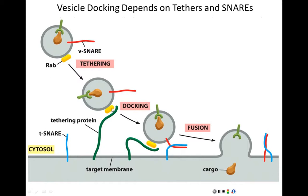RAB proteins on the vesicle membrane are recognized and bound by tethering proteins found on the destination membrane. Tethering proteins specifically bind only to RABs on vesicles that come from appropriate origins. You can think of a RAB as a return address: it tells the destination membrane where this thing came from, and based on that identity, the destination membrane decides whether to interact with it or not. If the RABs come from an unfamiliar origin, there will be no recognition, no binding, and the vesicle will quite literally bounce off that membrane and keep going.